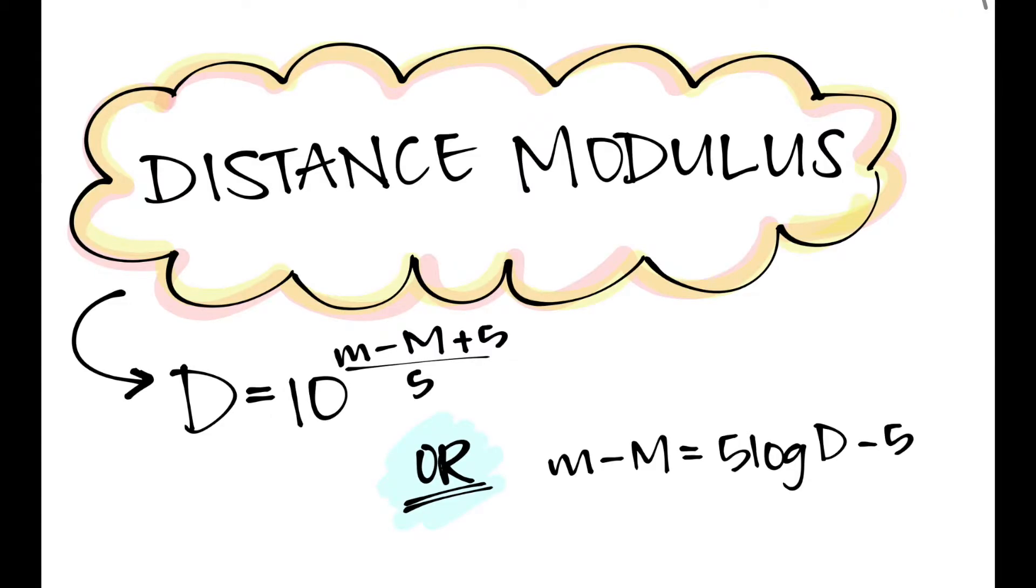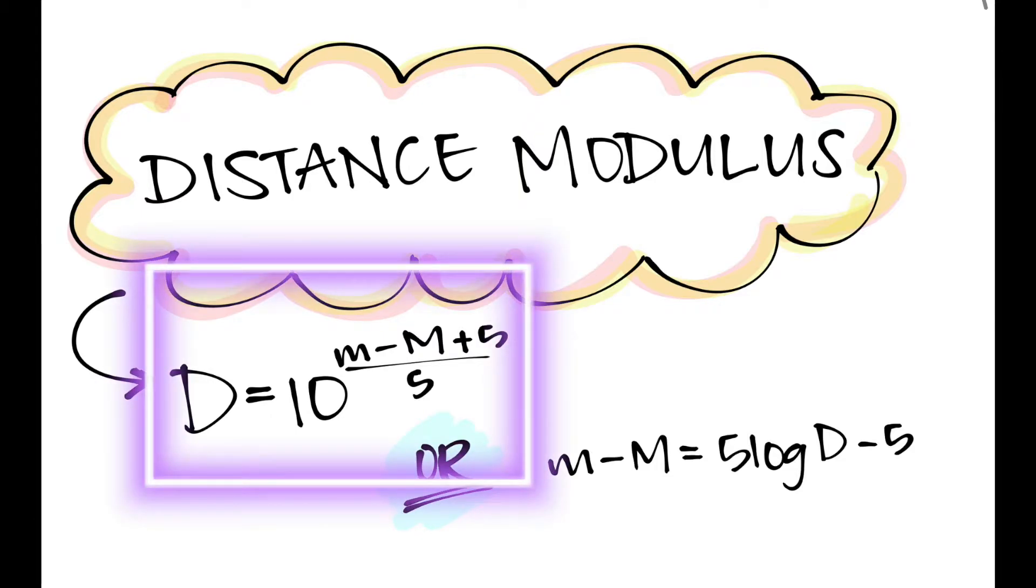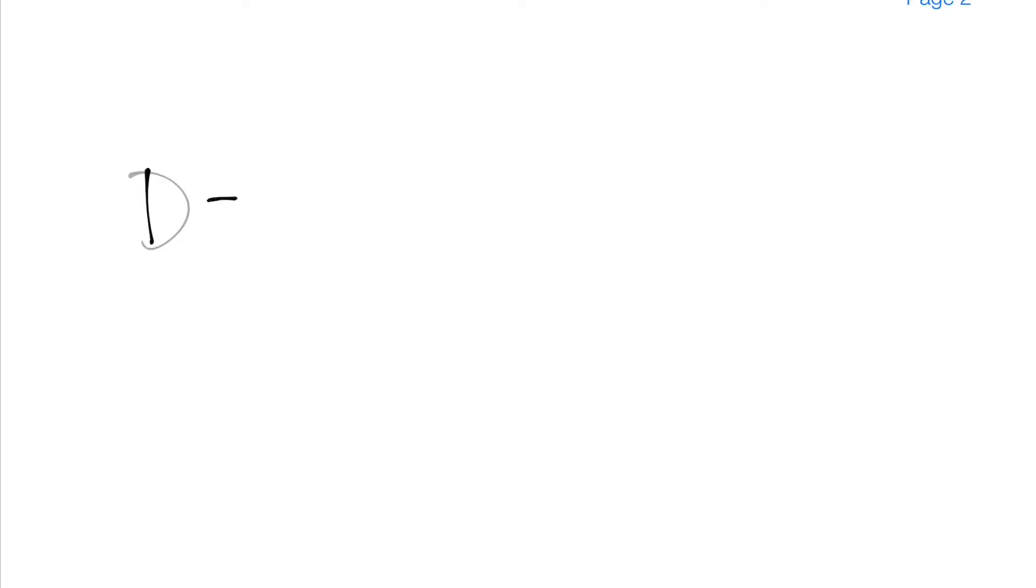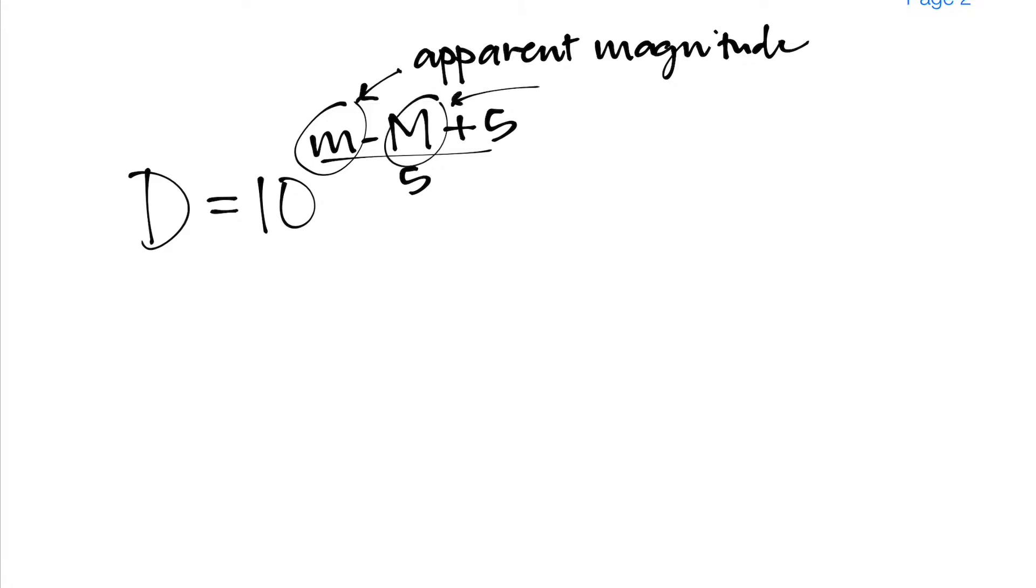Now you may have noticed that the distance modulus was given in two separate formats at the beginning of the video. The first format is the one that we're most likely more familiar with in our class, and that's the one where the distance modulus is written as D equals 10 to the power of lowercase m minus uppercase M plus 5, all over 5.